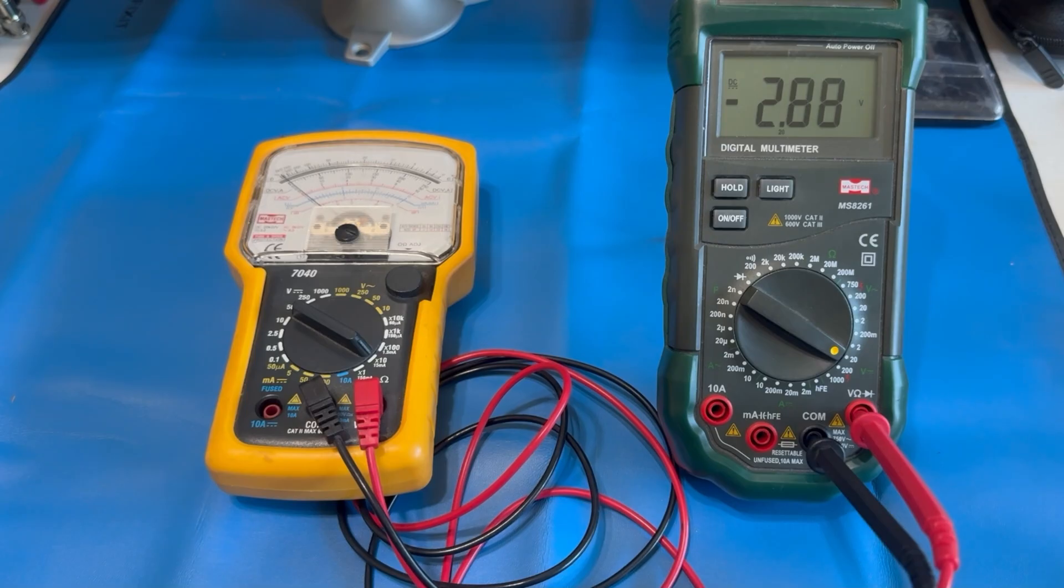So knowing that, I would put my black lead, if I'm doing an NPN, on the base, from base to collector, black lead on base, red lead on emitter or collector, and I should get conduction.